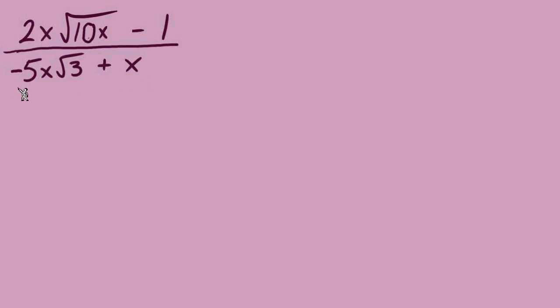Two terms, so we use the conjugate. Remember, when we use the conjugate, we only change the sign in the middle. So this -5x√3 is still -5x√3 in the conjugate. Only change that sign in the middle, in this case from plus to minus, and use the exact same expression to multiply to the numerator.